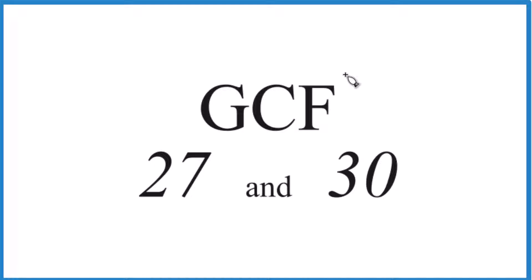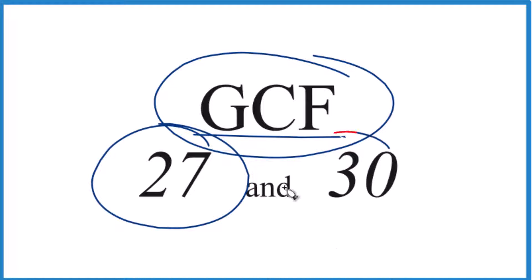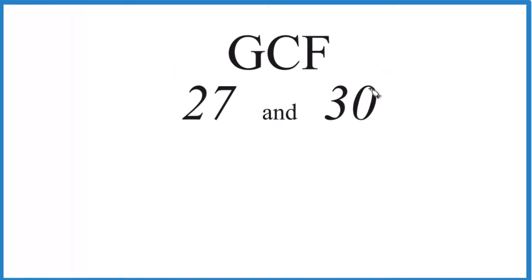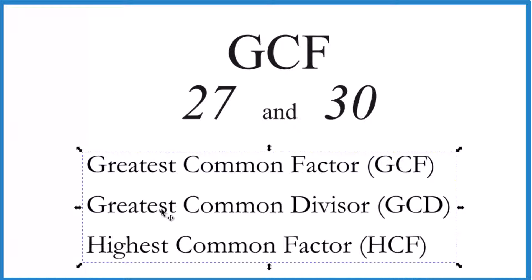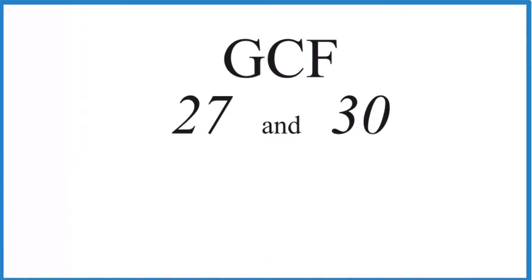Alright, let's find the GCF, the greatest common factor, for 27 and 30. The GCF, sometimes called the highest common factor or the greatest common divisor, these are all the same. What we'll do is find the factors of 27 and 30, look at those in common, and choose the greatest one. That's the GCF.